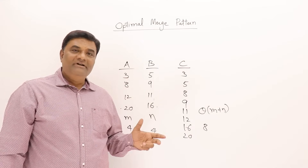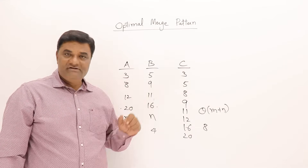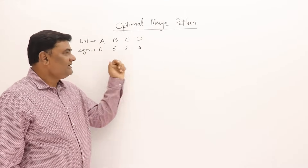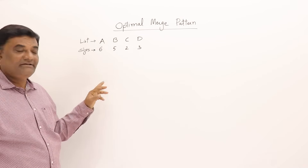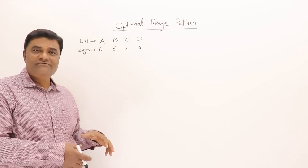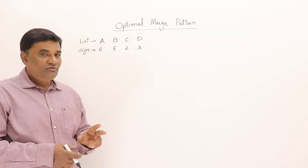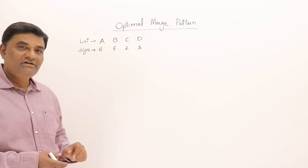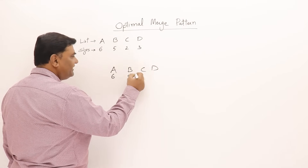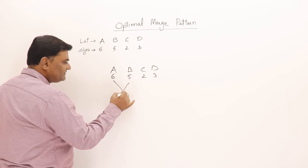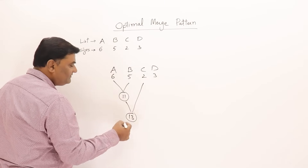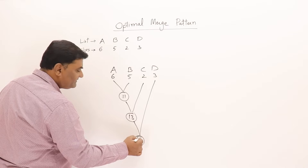Now let us extend the problem: what happens if we have more than two lists? Here I have four lists with sizes 6, 5, 2, and 3. I want to follow two-way merging, so at a time I merge only two lists. I'll merge 6 and 5 first to get a list of 11 elements, then 11 and 2 gives 13 elements, then 13 and 3 gives 16 elements.